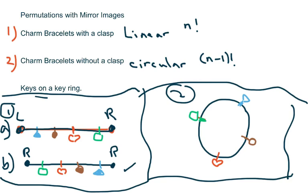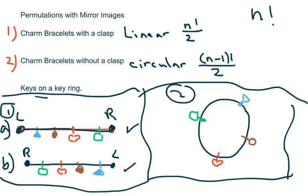When you're counting your arrangements, you're also counting the mirror version — but you already did the work to get that one. So what you're going to do is divide by two, because you don't want to count it twice. When you arrange arrangement A, you already did the work to get arrangement B. So when doing the linear arrangement of n factorial, you're also counting B, which is a duplicate — a mirror image. You only have to work once to get both.